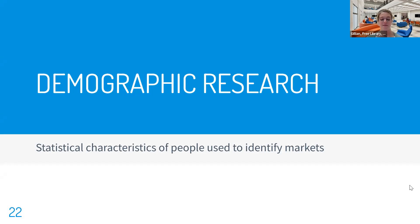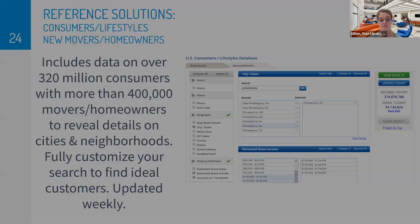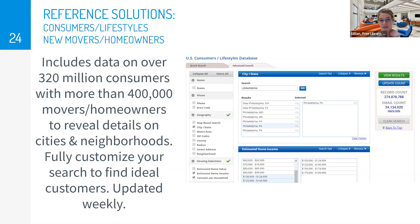Next, let's discuss demographic research, which is my personal favorite kind of research. The BRIC provides access to two demographic databases to help you locate your target audience. You can use this information to build on your market research to decide how you will reach and market to potential customers. Reference Solutions is a collection of databases similar to Mergent Intellect — it's a powerhouse of information on consumer and business data, and it's essentially a tool for building lists. For demographic research, Reference Solutions has two main databases: consumers and lifestyles, as well as new movers and homeowners.